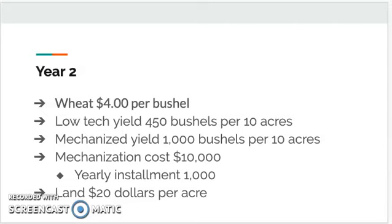Year two. Wheat is now $4 per bushel. A low-tech yield, if you chose to keep your farm low-tech, is 450 bushels per 10 acres. A mechanized yield is 1,000 bushels, or 10,000 bushels for 10 acres. The cost of getting mechanized is $10,000; yearly installments are still $1,000. If you want to purchase more land, it's $20 per acre. Take a moment to figure out what you're going to do and write it all down.